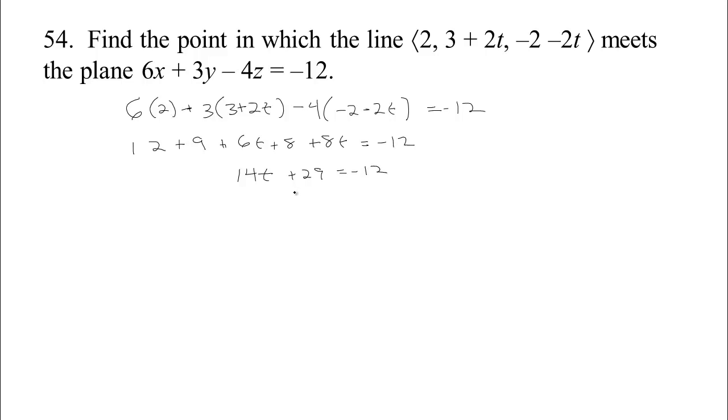So 14t plus 29 equals negative 12. So 14t, that makes negative, if we take 29 away from this, taking away 30 would give negative 42. So we get negative 41. So t equals negative 41 over 14.